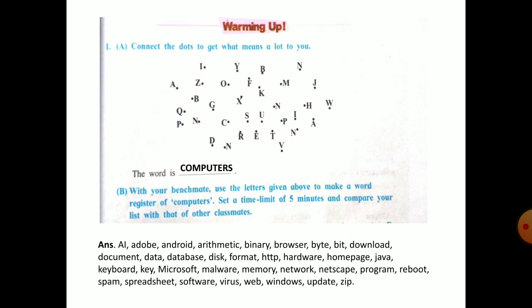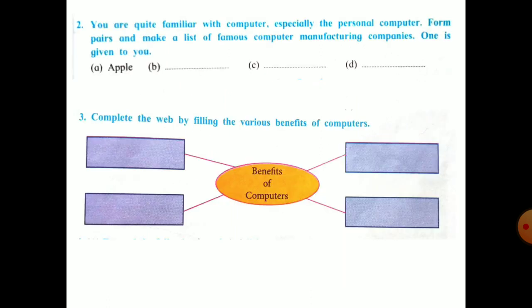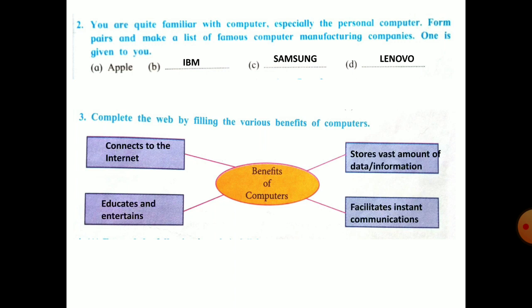Next question: you are quite familiar with computer, especially the personal computer. Form pairs and make a list of famous computer manufacturing companies. One is given to you, Apple. So the remaining three you have to write down here: IBM, Samsung and Lenovo. Third question: complete the web by filling the various benefits of computers. So we have to write down the benefits of computer. First use of computer is connect to the internet, then education and learning, third use stores vast amount of data and information, then facilitates instant communications. These are the benefits of computers.